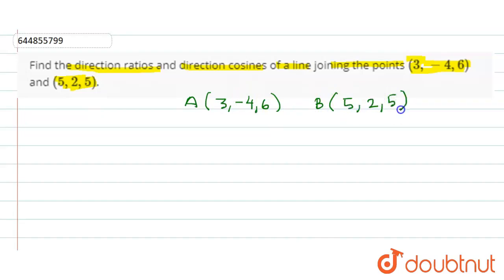If we want to find the direction cosines or direction ratios of the line joining these points, first of all let me find the vector AB that is along the line. So vector AB can be calculated by finding